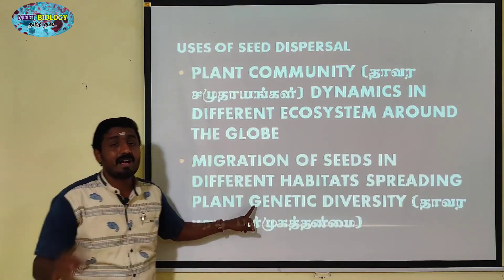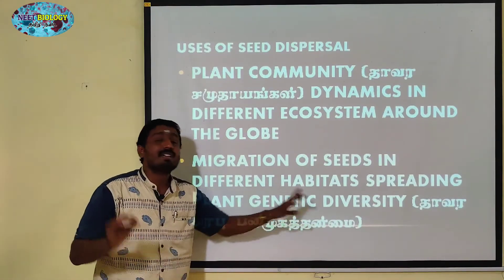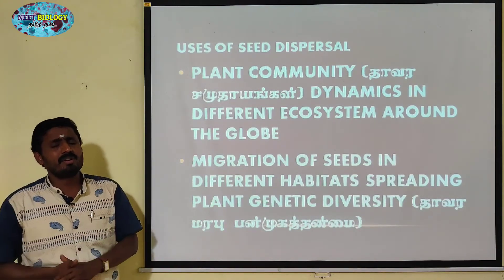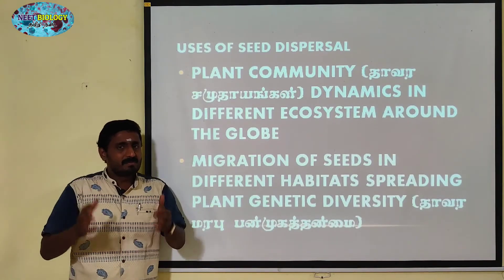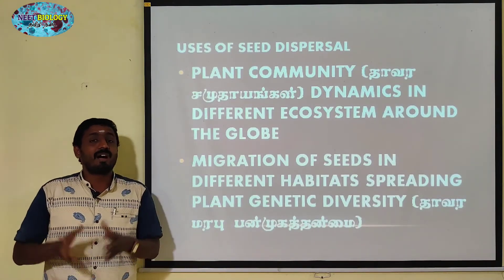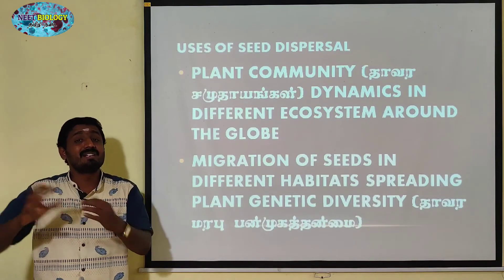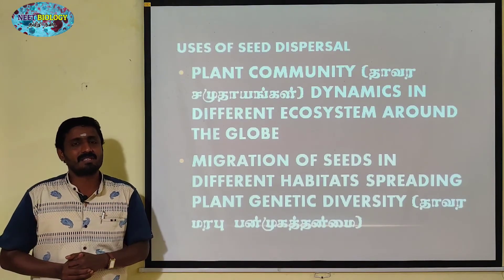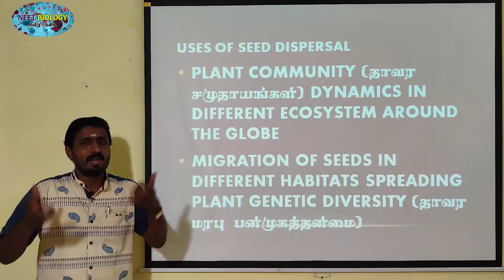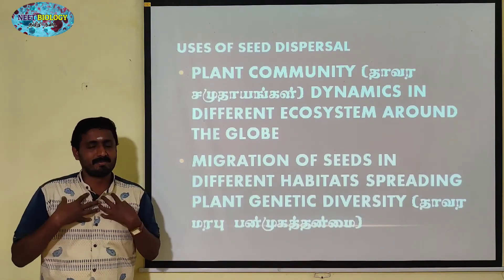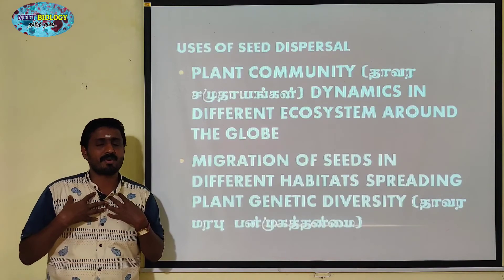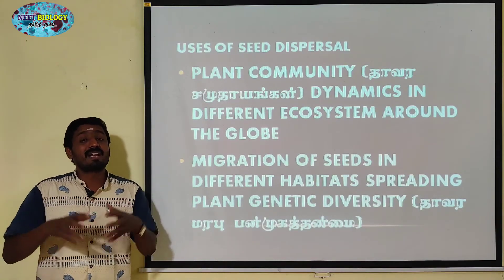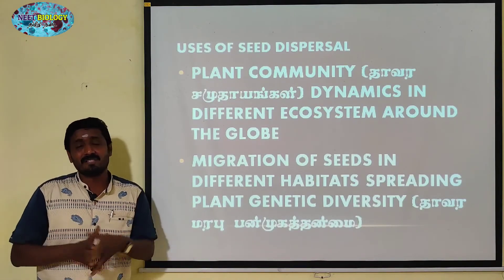That is the genetic diversity — that's why there is one species but there are different kinds of genes. For example, human beings — there are different kinds of genetic diversity.